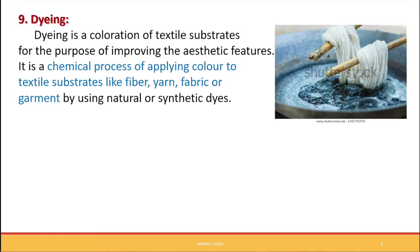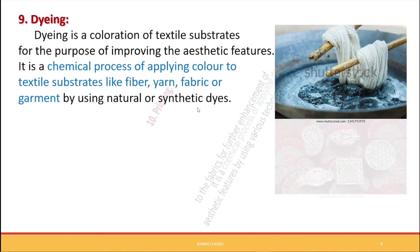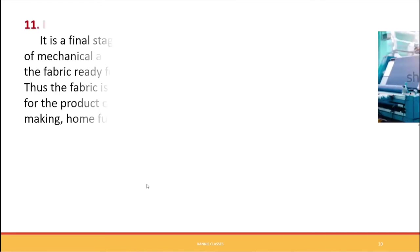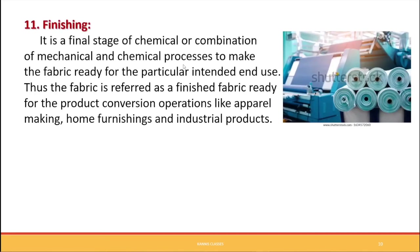Dyeing is the coloration of textile substrates. Color can be added at the fiber stage, yarn stage, or fabric stage to improve aesthetic features. It is a chemical process of applying color to textile substrates using natural or synthetic dyes. Printing is a chemical process of applying designs to fabric to improve its beauty, and there are many types of printing techniques. Finishing is the final stage - a chemical or combination of mechanical and chemical process - to make the fabric ready for its intended end use, resulting in a finished fabric ready for making apparel, home furnishings, and industrial products.